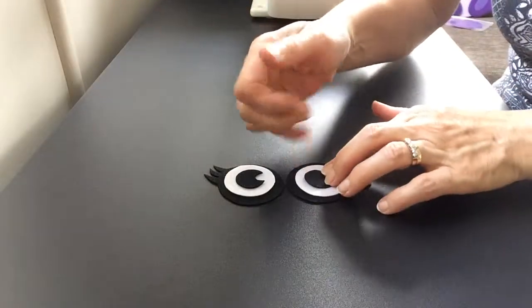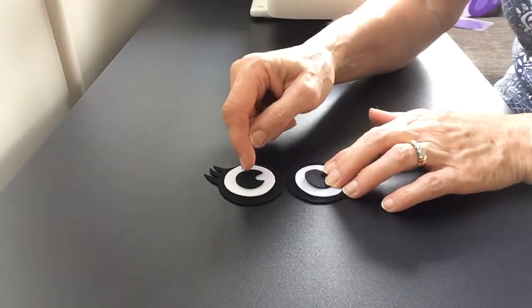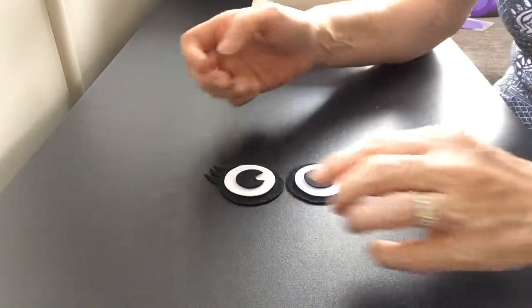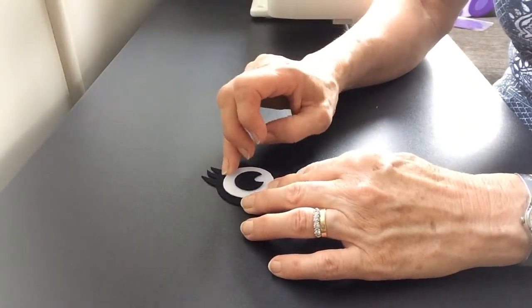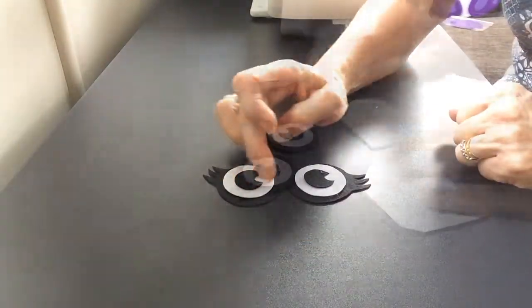The next thing to do is place a little bit of fusible webbing under those pupils, iron them on, and then stitch in black around the edge. Then I'll repeat that: I'll put fusible webbing under the white felt and stitch the white area with white.